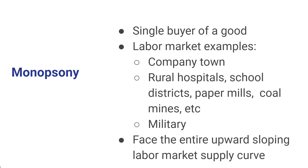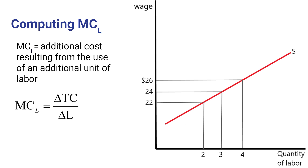Because a monopsony is the only firm in its labor market, it faces the entire upward-sloping labor market supply curve. This diagram provides an example of a monopsony facing a market supply curve where it can hire two workers at a wage rate of $22 an hour, three workers at a wage rate of $24 an hour, or four workers at a wage rate of $26 an hour.